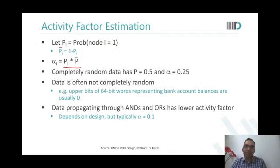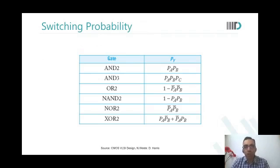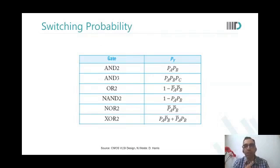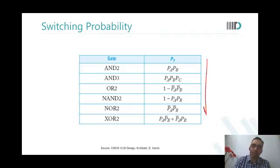Why do AND and OR gates have lower activity factor? For an AND2 gate, the probability of the output being 1 is the product of the probability of A being 1 and B being 1 — so it is 1/4 for random inputs. For AND3 the output probability is 1/8, and so on.